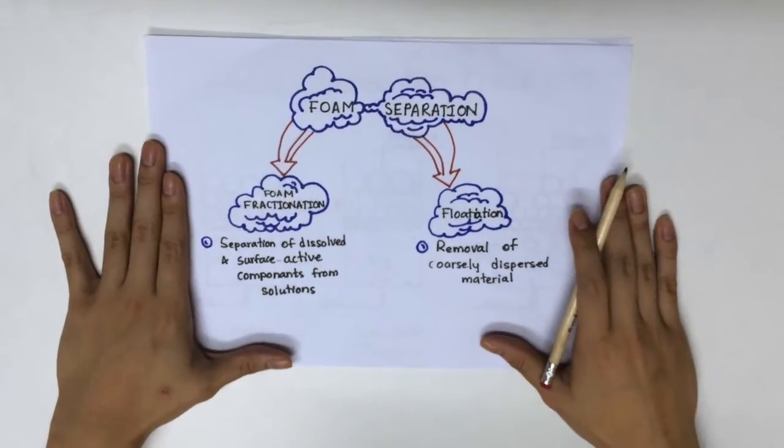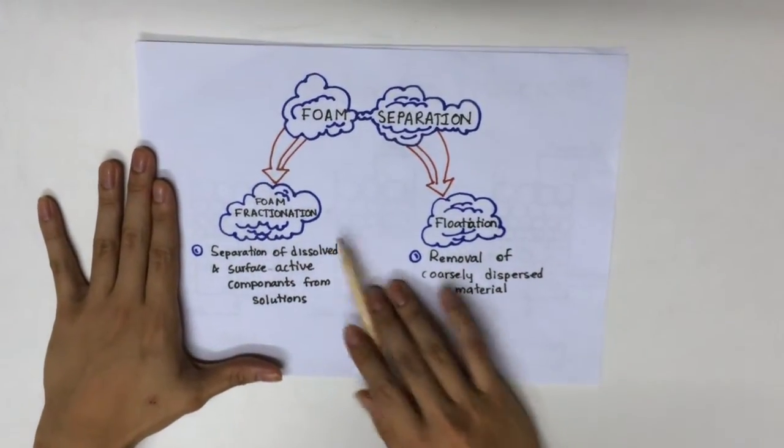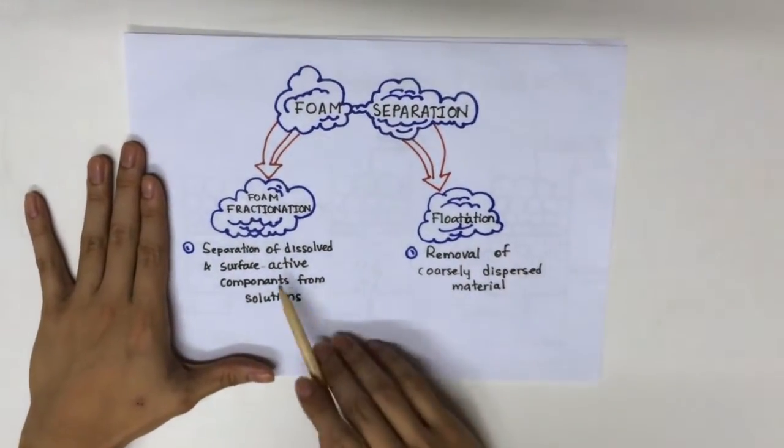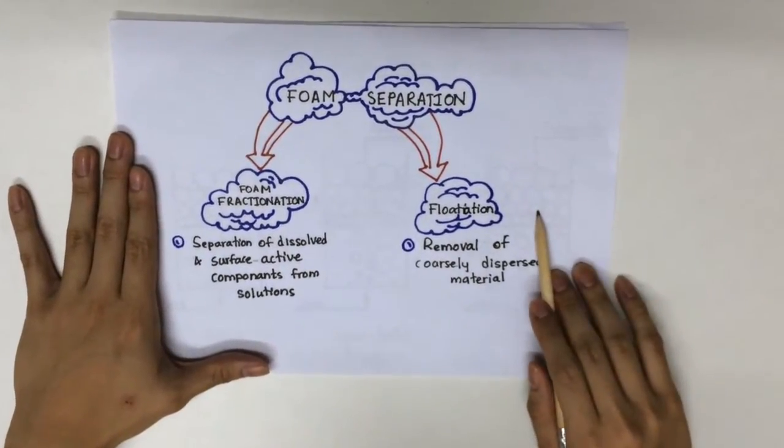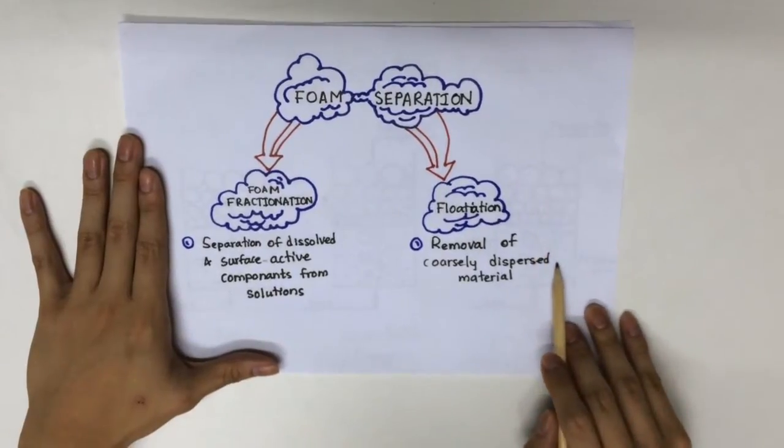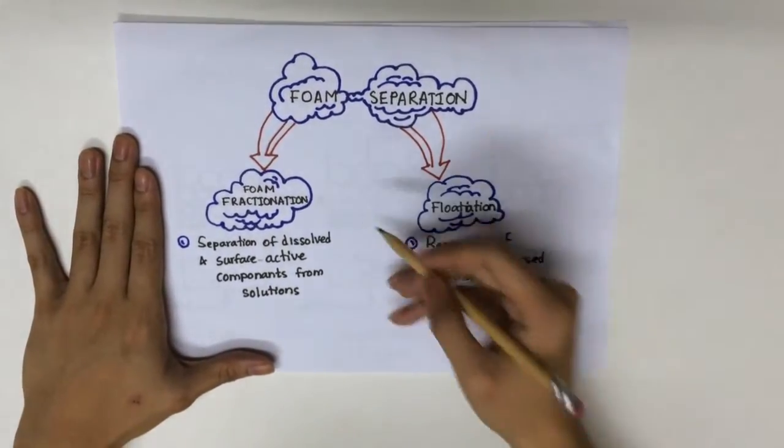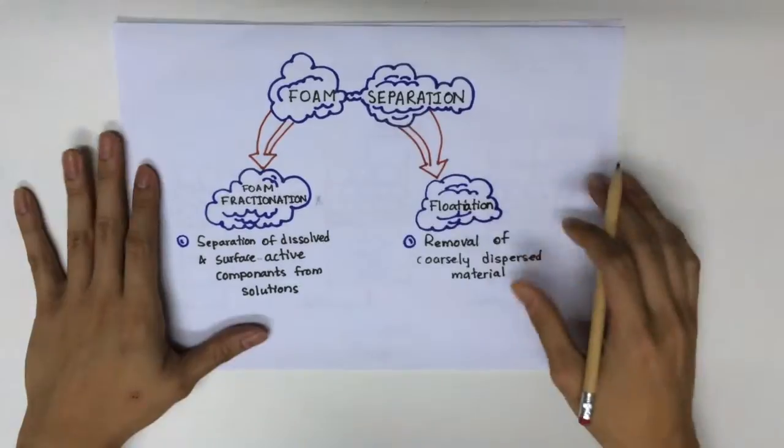There are two types of foam separation: foam fractionation and flotation. Foam fractionation is the separation of the soft and surface active component from solution, whereas flotation is the removal of causally dispersed material. Today, we will be talking about foam fractionation.